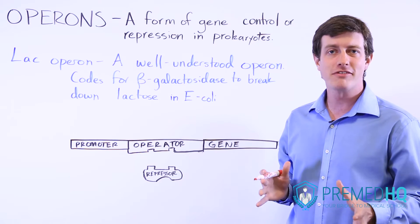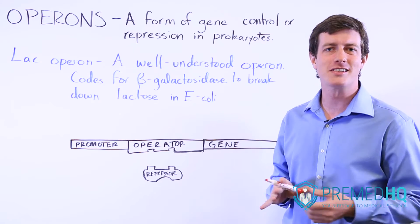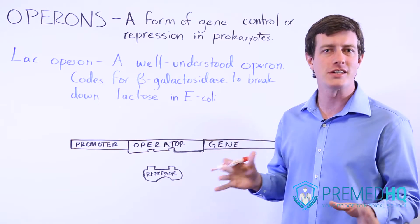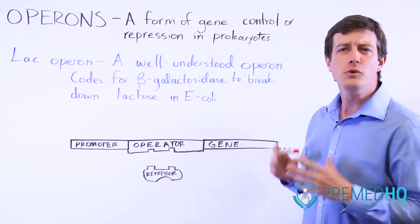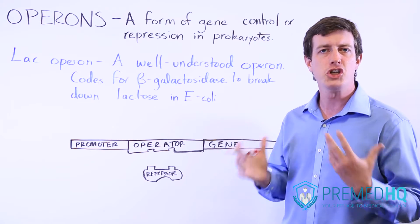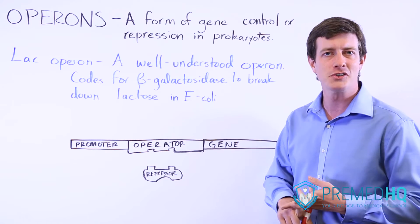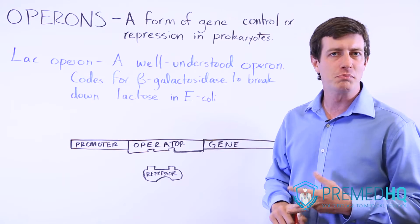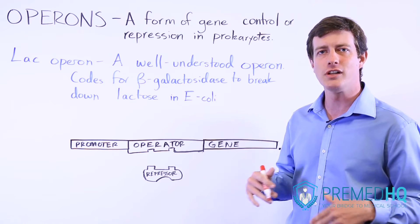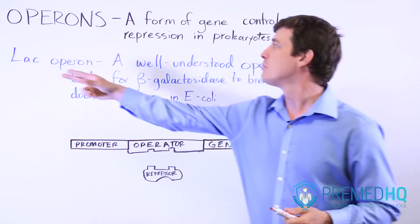Maintaining homeostasis often involves controlling the expression of different genes to make sure you're producing the right proteins needed for whatever state the organism is in. In eukaryotic cells, there are many different forms of gene control involving transcription factors, phosphate groups, and other things. But the most commonly tested form of gene control — and the most straightforward one you're likely to encounter — is known as an operon.